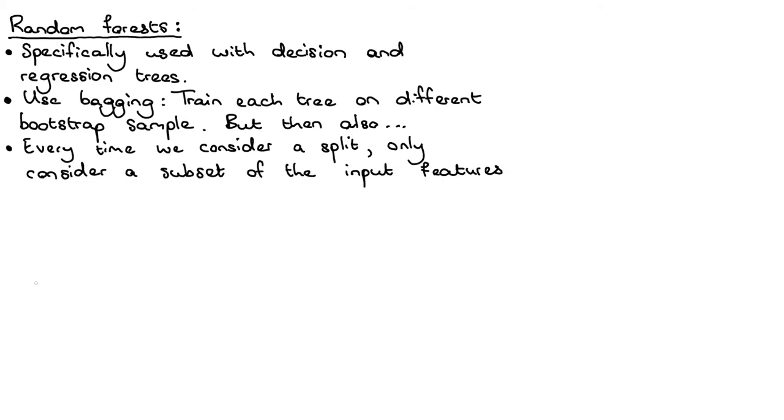Normally when we're growing a decision tree, we've got some input x, and that input might be d-dimensional. Okay, so that means if we're at a specific node and we're considering how should this leaf node be split into two new nodes,